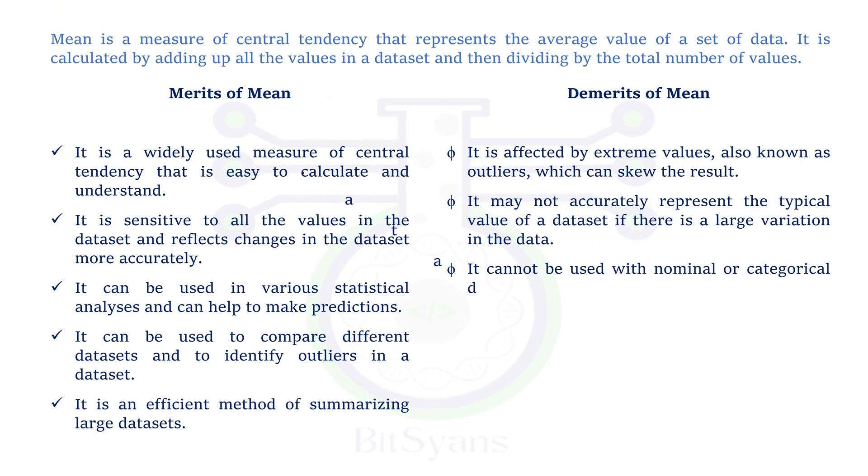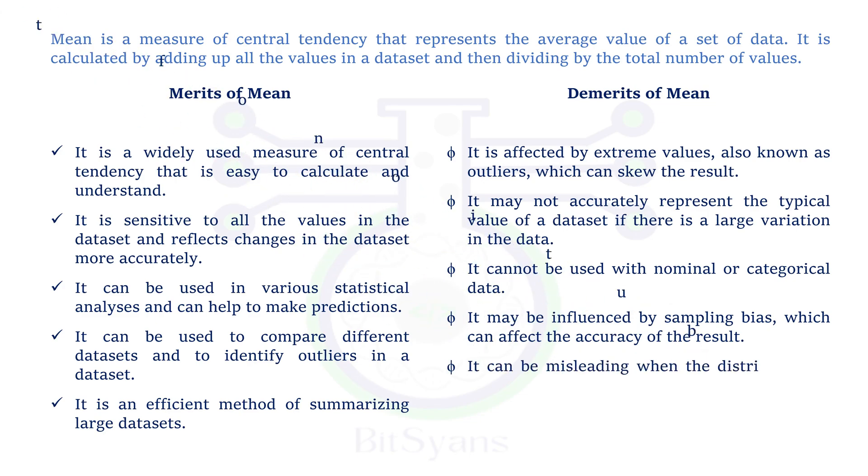Mean cannot be calculated unless all the items of a series are known. It can sometimes be misleading as well. Mean cannot be used for small number of classes. Mean cannot be used for qualitative characteristics, such as colors of flowers, sweetness of oranges, or darkness of the color.